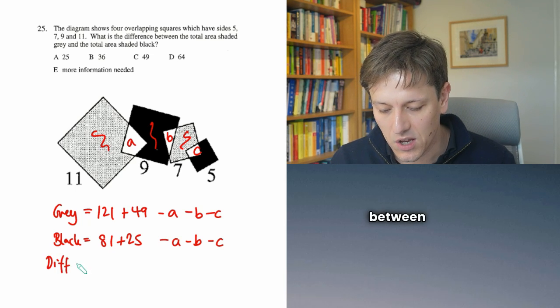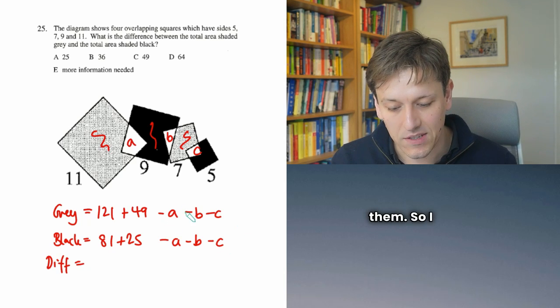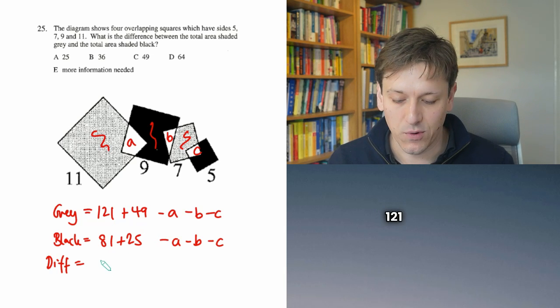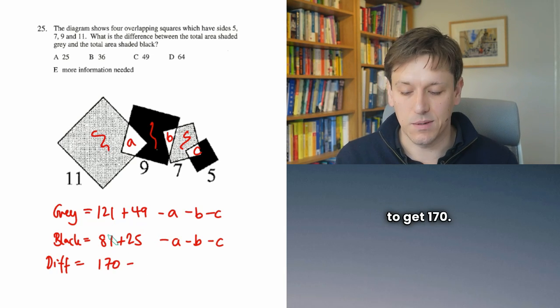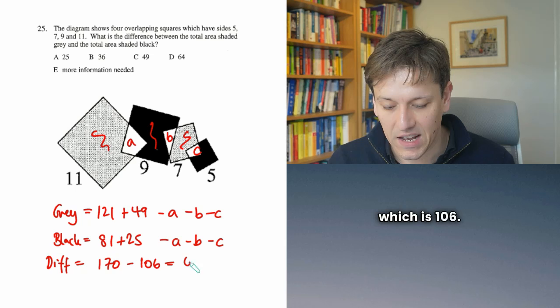So the difference between these, you can see they've both got A, B, and C subtracted from them. So I don't need to consider those for the difference. It doesn't really matter at all. I just do 121 plus 49 to get 170, and I subtract 81 plus 25, which is 106. And that leaves me with 64.